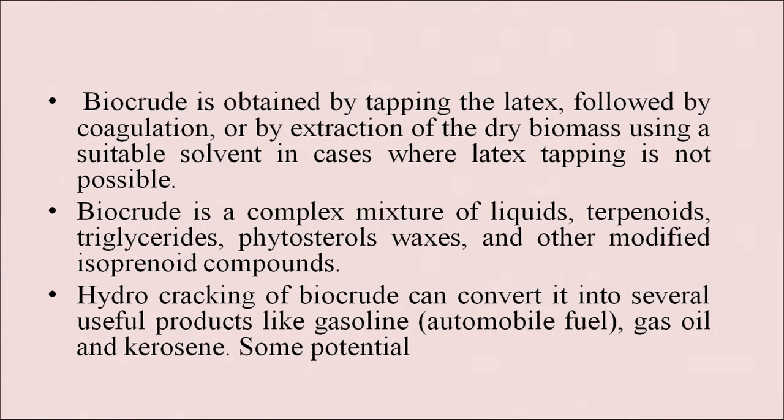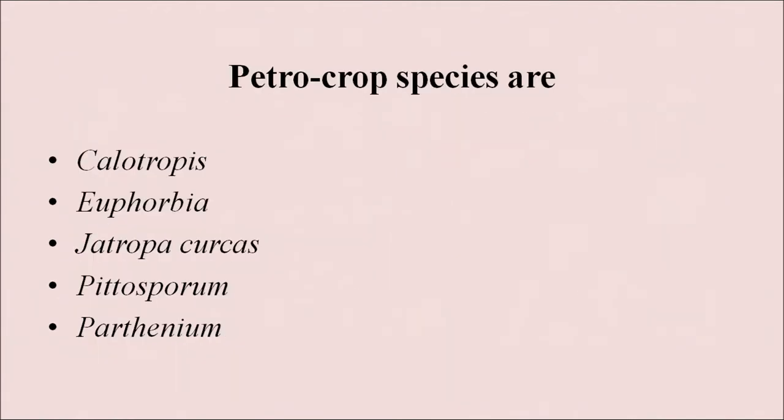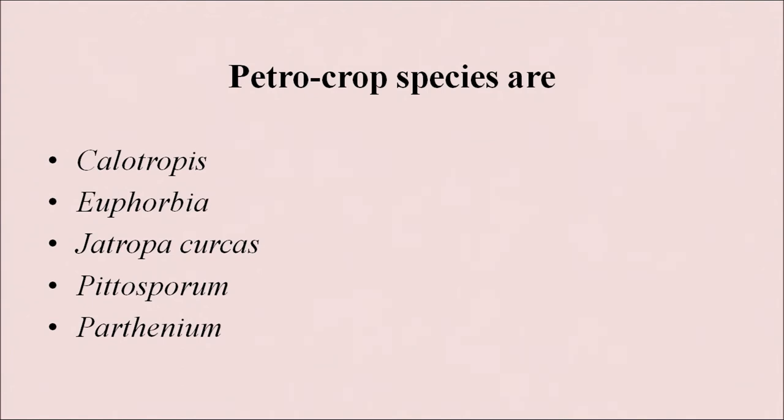Some of the petrocrop species are Calotropis, Euphorbia, Jatropha curcas, Pittosporum and Parthenium.